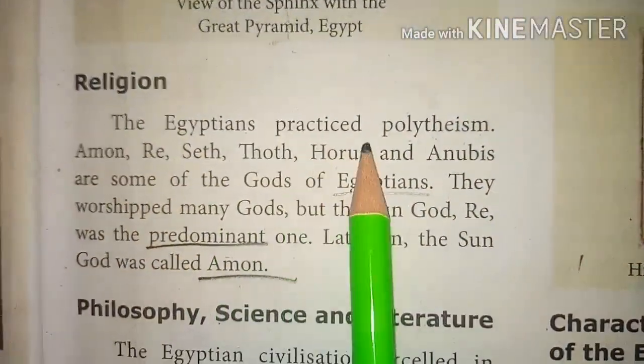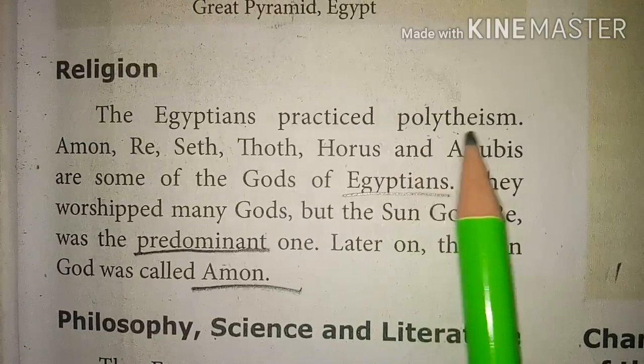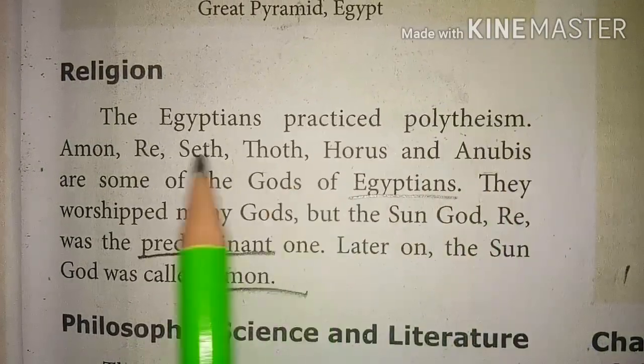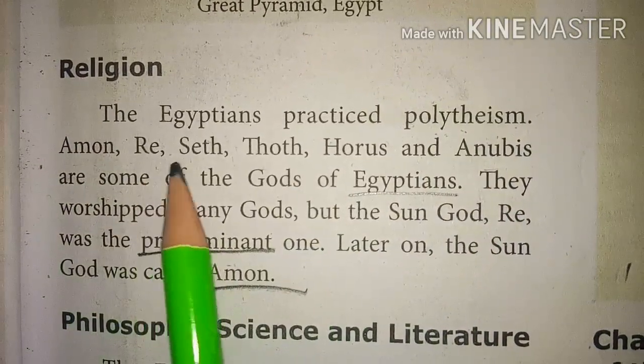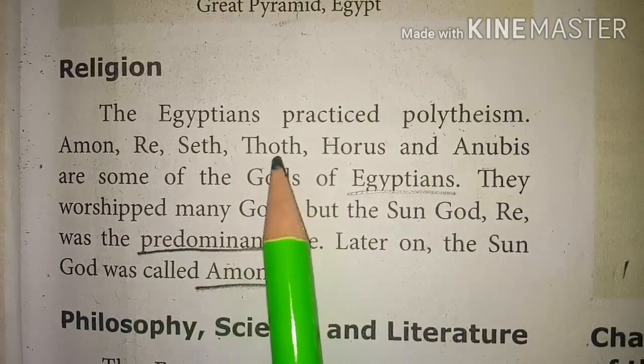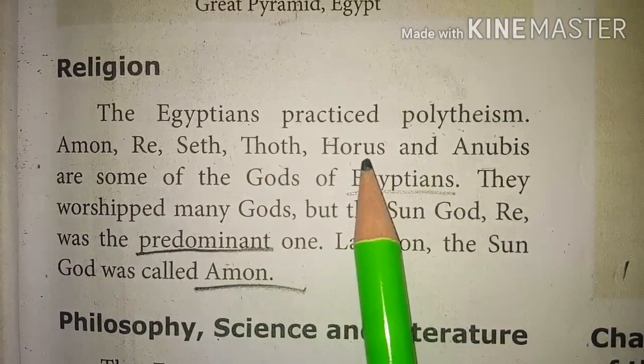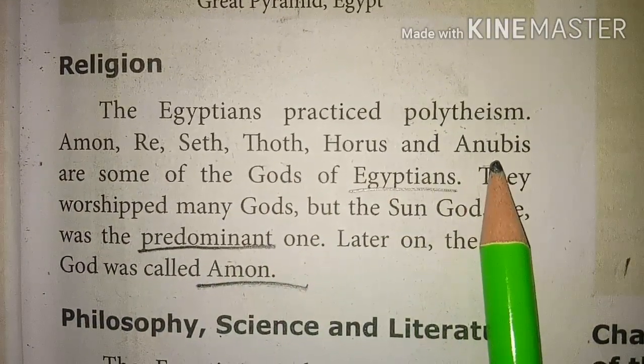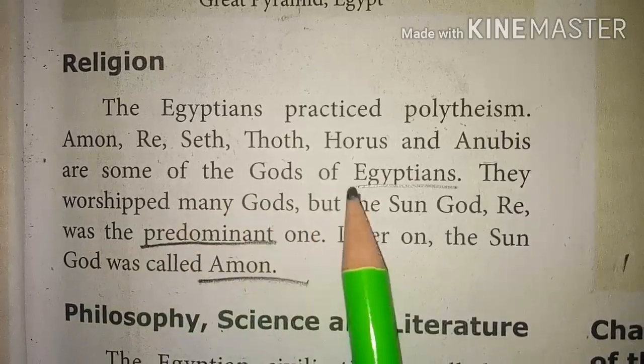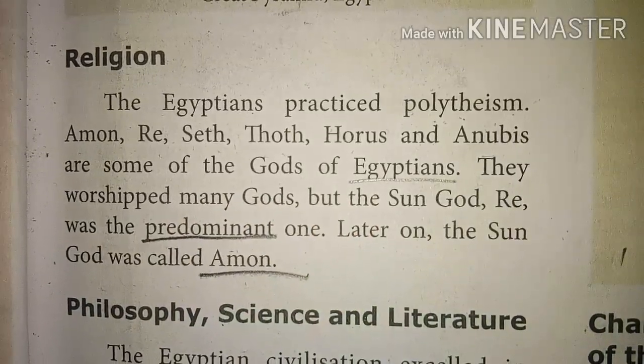Look at the great pyramid of Giza and the view of the Sphinx with the great pyramid. Then, religion: The Egyptians practiced polytheism. Amun, Ra, Seth, Thoth, Horus and Anubis are some of the gods of Egypt.